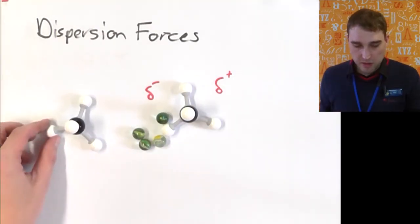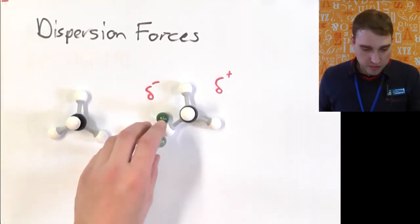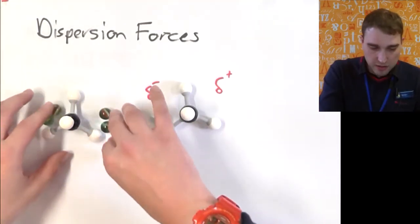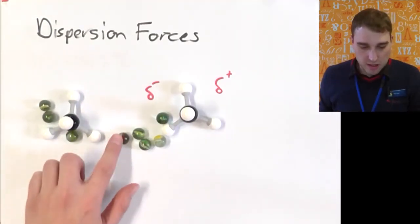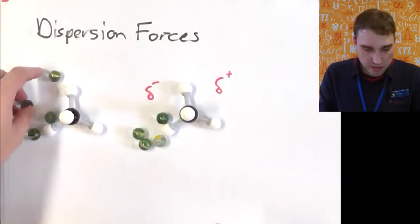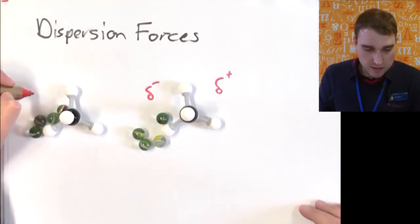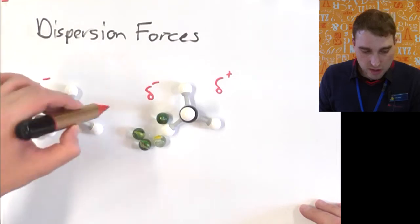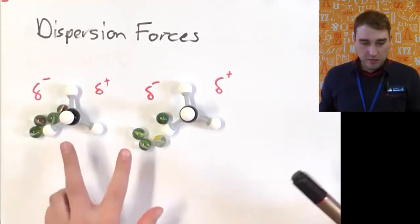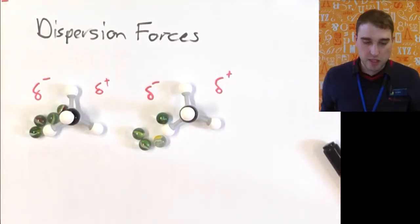If I have another methane molecule nearby, by having all these electrons down here — negative — the electrons that would normally be floating around and moving around the methane are going to be pushed away by repulsion. So my electrons that would normally be over here are pushed over to this side. That gives this side a delta-negative charge and this side a delta-positive charge. So now we've got a delta-positive and a delta-negative close together, so we're going to get attraction between the molecules.